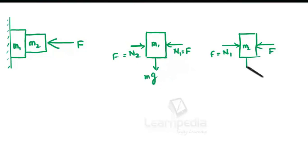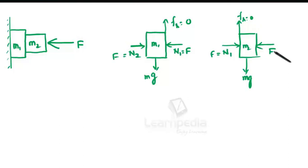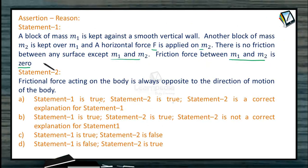Both bodies are pulled down due to gravity, so mg acts downward on each. The horizontal forces are balanced. The friction force equals mu times N, and N equals F here. Since both bodies accelerate downward equally due to gravity and the horizontal forces are balanced, the friction force between m1 and m2 is zero. So Statement 1 is true.